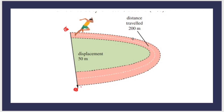So what is the difference between distance and displacement? Distance is the total length covered by the body along the path. Displacement is the shortest distance measured between the starting and ending positions.